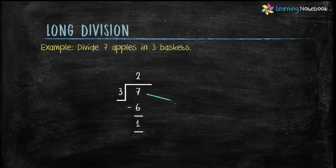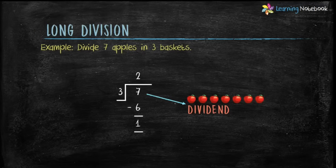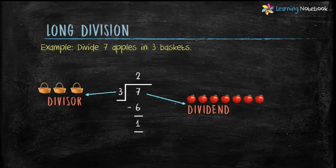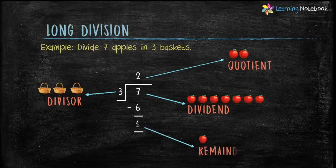So students, as displayed, 7 is the dividend — the 7 apples in our example. 3 is the divisor by which we divide the dividend. 2 is the quotient, and 1 is the remainder which cannot be divided further. This is the long division method.